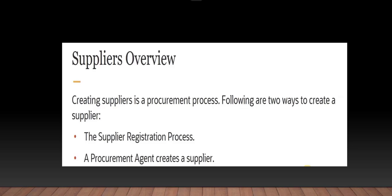There are two ways in which suppliers can be created. The first is known as the supplier registration process, used by external companies and also by internal users on their behalf to submit a registration request to become a supplier of the buying organization. Regardless of how a supplier is introduced, the buying organization reviews the registration request using a collaborative review process and determines whether it wants to consider the company as a new source of supply. The outcome is either approved or rejected. If approved, the system automatically starts a process to create a supplier record from the registration request.